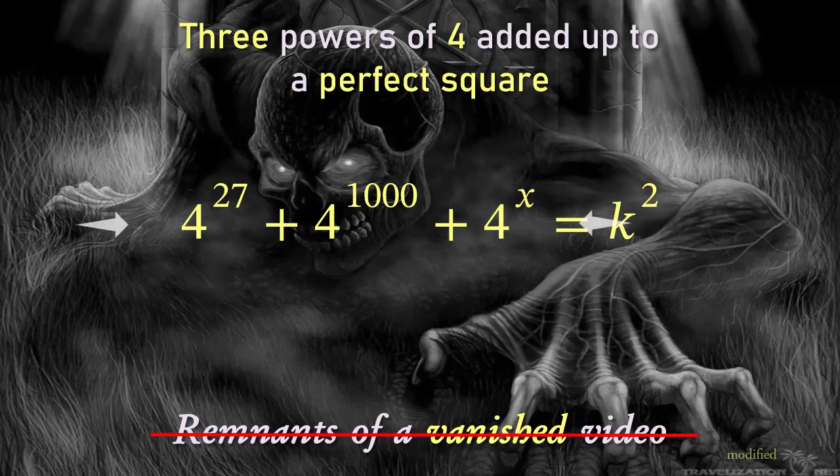Since the left hand side is obviously a positive number, k cannot be 0, while a negative value of k can be replaced by its opposite positive value. So let's take k to be a positive integer. Furthermore, since the right hand side is a whole number, the left hand side must be a whole number as well. The first two terms are obviously whole numbers, therefore the last term might be also a whole number. In this case, x may have 2 in the denominator, but nevertheless, I assumed x to be a non-negative integer.